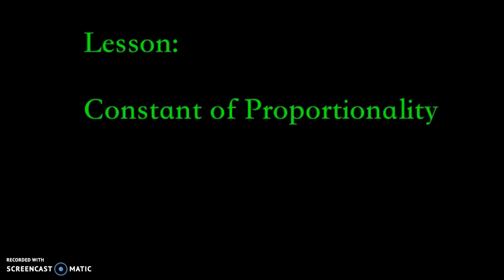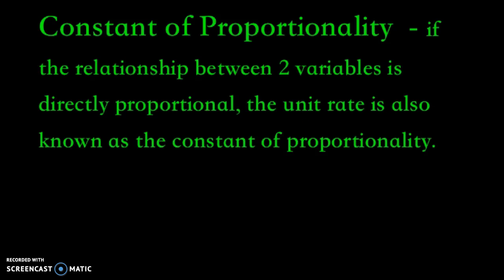In this lesson, we're going to focus on the constant of proportionality and just try to figure out what that is. So the constant of proportionality is a term we use if the relationship between two variables is directly proportional. The unit rate is also known as the constant of proportionality.